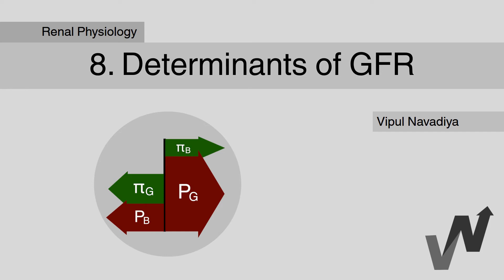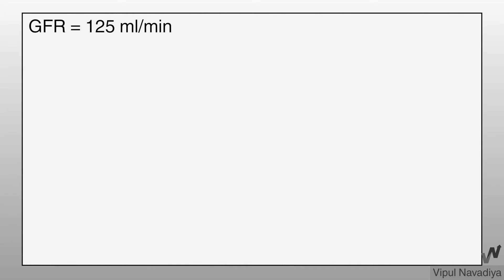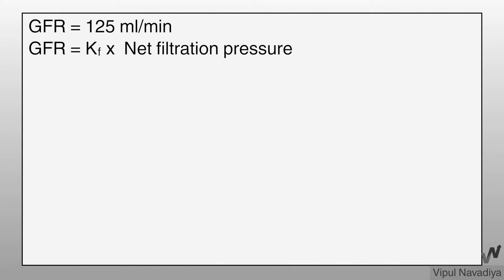In this video, we will see determinants of GFR. In the previous video, we saw that GFR is 125 ml per minute. Mathematically, it is equal to filtration coefficient multiplied by net filtration pressure.